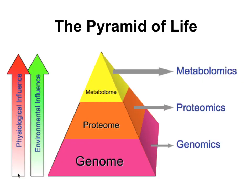One way I usually begin presentations about metabolomics is with a picture of a pyramid — I call it the pyramid of life. It shows the relationship between genomics and the genome, which is the base. Your DNA, plant DNA, or microbial DNA essentially codes for everything above it. Typically the genome is very large — humans have around 22,000 to 23,000 genes and 3.1 billion bases. Genes code for proteins.